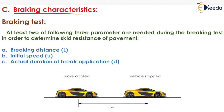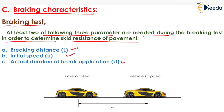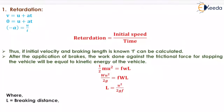The next characteristic is braking characteristics. In braking characteristics, the first topic is the braking test. At least 2 of the following 3 parameters are needed during the braking test to determine the skid resistance of the pavement: braking distance L, initial speed U, and actual duration of brake application D. At the point of brake application the vehicle stops, so the final speed V equals zero.